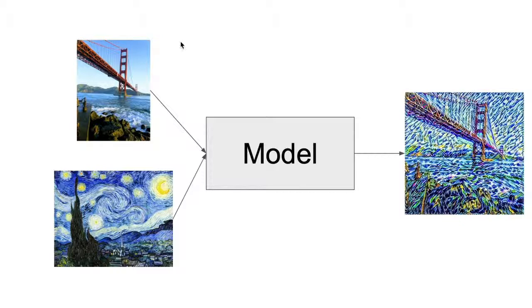Style transfer at a very high level takes in an input image, which is a content, takes in a style image, and outputs a stylized image that is like the style.